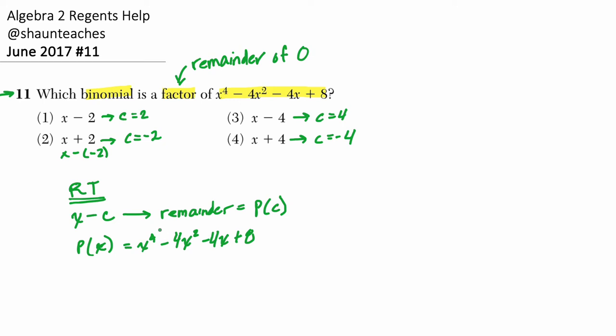And we are looking for an output of 0. So let's go through these one at a time and watch how quick this is. So first we'll start with x minus 2. So c is 2, we'll plug in 2. And what do we get?